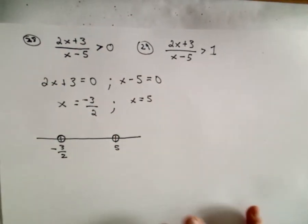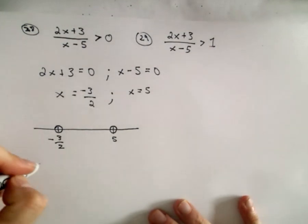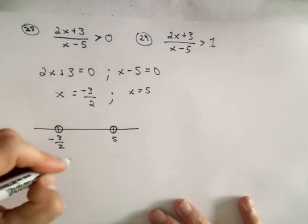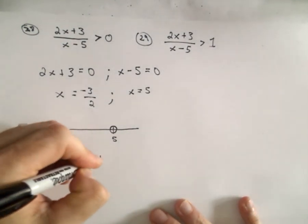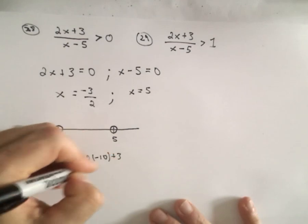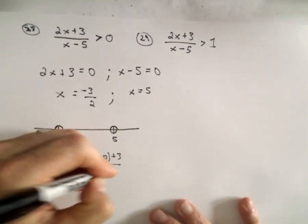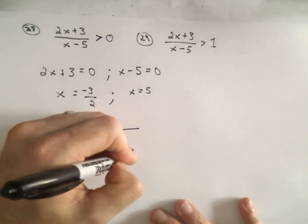And now we just have to take a number from each interval just like before. So maybe x equals negative 10. We'll have 2 times negative 10 plus 3 over negative 10 minus 5. I'm thinking, is that greater than 0?